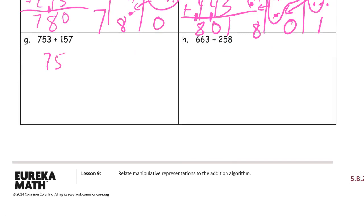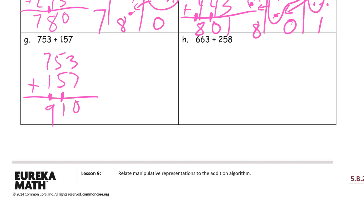Seven hundred fifty-three plus one hundred fifty-seven. Start with the ones digits: three plus seven is ten — there's the ten I compose. Five plus five is ten, another one is eleven — that's eleven tens, so I have to compose a hundred. And I have one ten left behind. Now add up my hundreds: seven plus one is eight, and one more is nine — nine hundred ten.